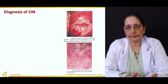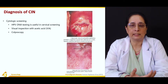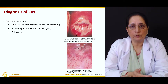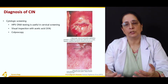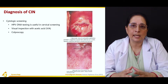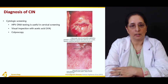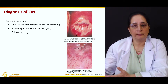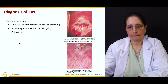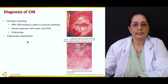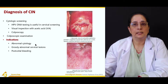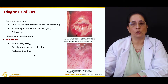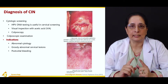Diagnosis of cervical intraepithelial neoplasia is by cytology. Cells and tissue are removed and examined for atypical or dysplastic changes suggestive of cancer. HPV DNA testing is also useful in cervical screening. Visual inspection with acetic acid is performed, and colposcopic examination is carried out if there is abnormal cytology, abnormal cervical lesion, or post-coital bleeding.